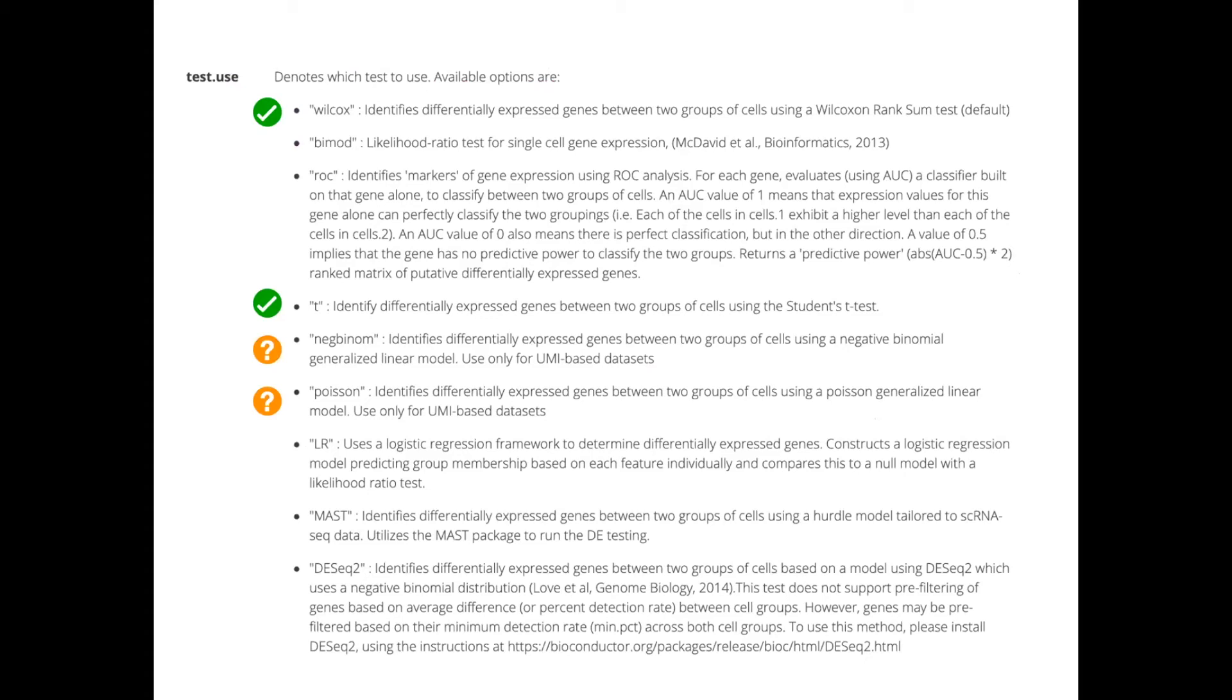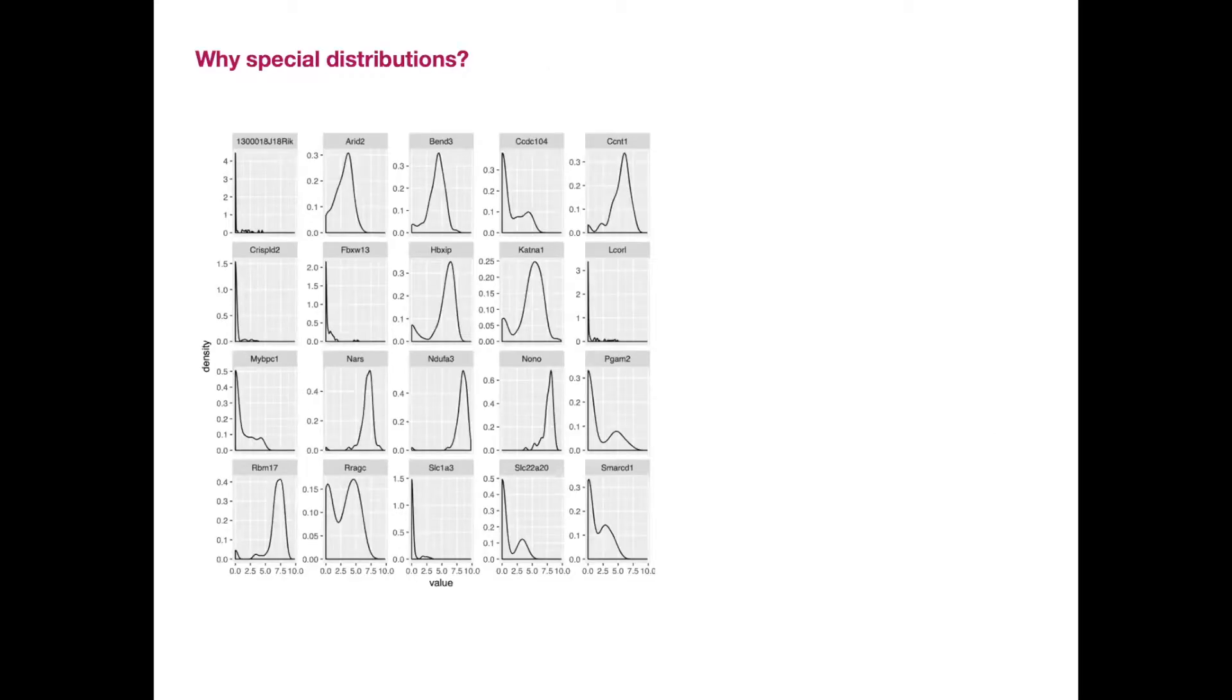Then we have some that try to fit other kinds of distributions like negative binomial or Poisson. And then we have the issue to decide what is the distribution of our single cell data. So here is just a group of genes plotted with the expression across a data set of single cells.